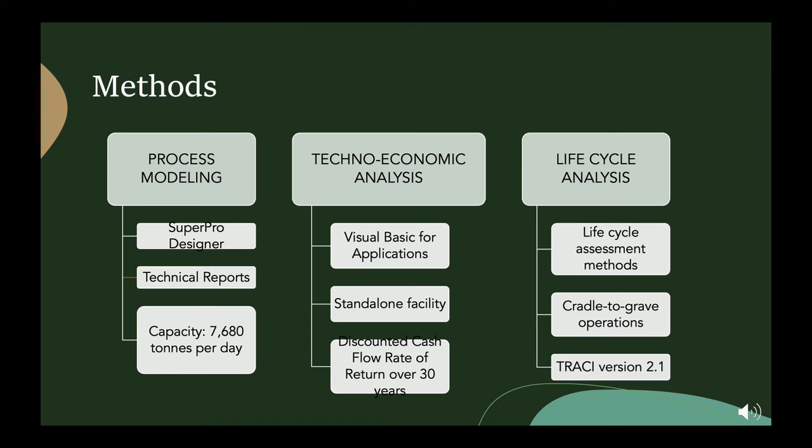In order to provide a holistic approach to the economic and environmental implications of ABE production, we used the following methods. Process modeling was done using SuperPro Designer to track materials and energy consumption, and these balances were then used to inform the techno-economic and life cycle analysis. The modeling was done using data from literature and the facility was considered to process 7,680 tons of biomass per day. The techno-economic analysis was done using Visual Basic for Applications routines to perform a discounted cash flow rate of return on a standalone facility over 30 years. The life cycle assessment was done using LCA methods from the International Standard Organization's LCA Principles and Framework.